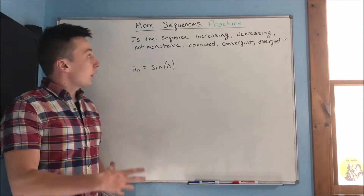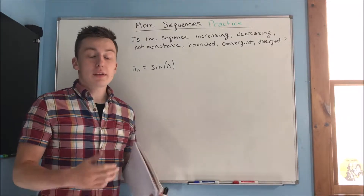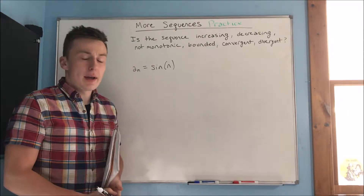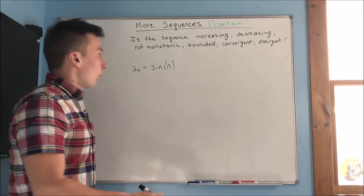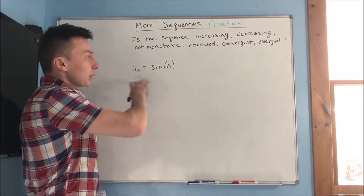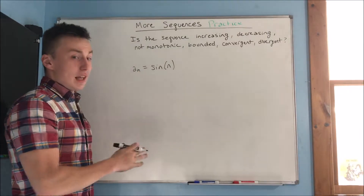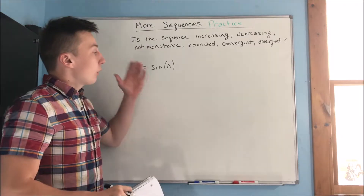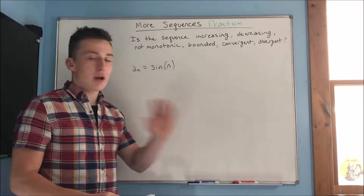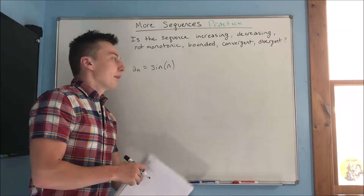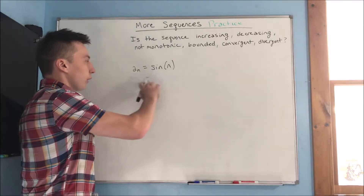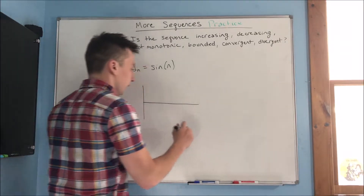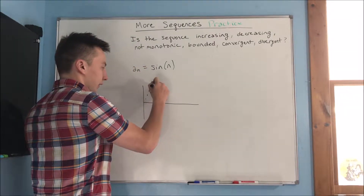In this video we're going to be doing some more practice with sequences. We want to find out whether a sequence is going to be increasing, decreasing, or not monotonic — meaning it's not purely increasing or decreasing. We also want to find out if it's bounded, convergent, or divergent. So first off, a sub n equals sine n — that's just going to look like sine x, except plotted as discrete dots.